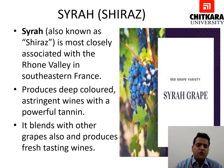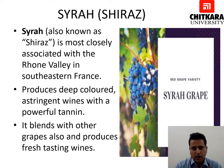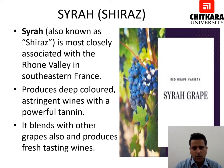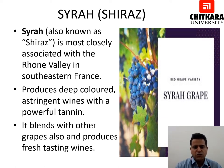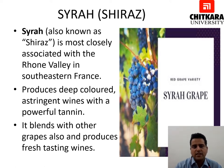There are more than 100 grape varieties, but only a selected few are used for wine production. In this video we are only going to talk about the famous red and white wine grapes. The next red wine grape is Syrah, or Shiraz, which is most closely associated with the Rhône Valley in south-eastern France. It produces deep-coloured, astringent wines with a powerful tannin, and also blends with other grapes to produce fresh-tasting wines. It is also grown in various African countries.